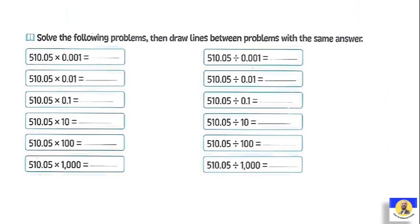Solve the following problems and draw lines between problems with the same answer. If we have 510.05 multiplied by 0.001, الأنصر ده زي مين؟ Divided by 1000. يعني نفس النمبر كأني بعمل divided by 1000. يبقى الأنصر: 0.51005.